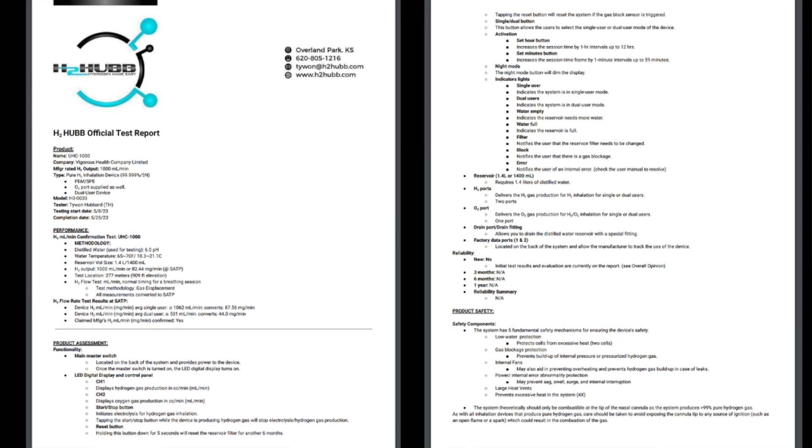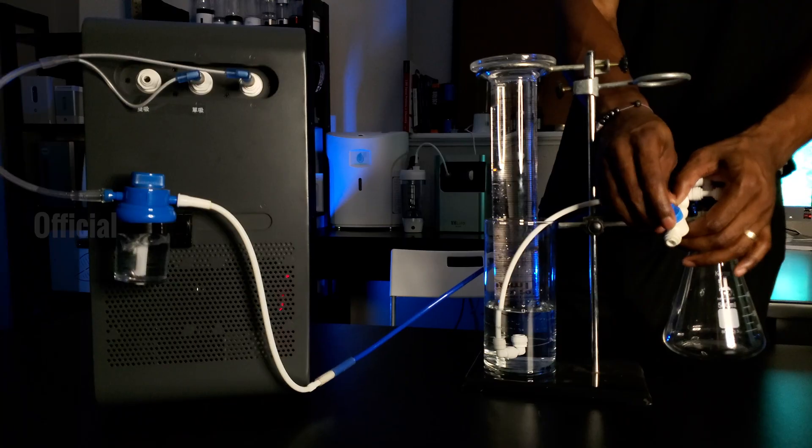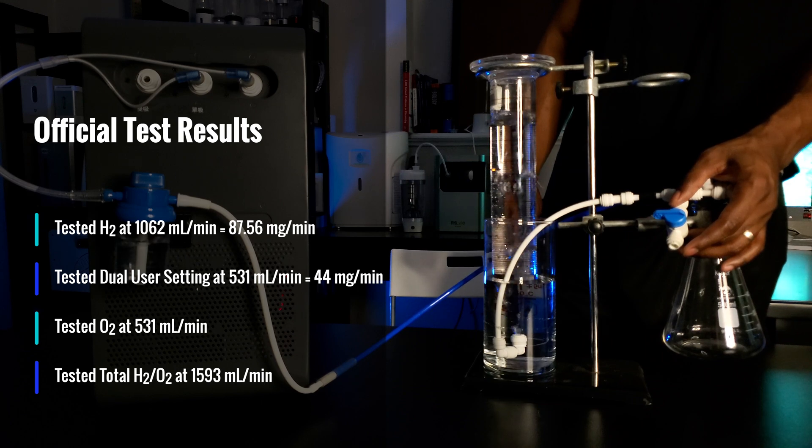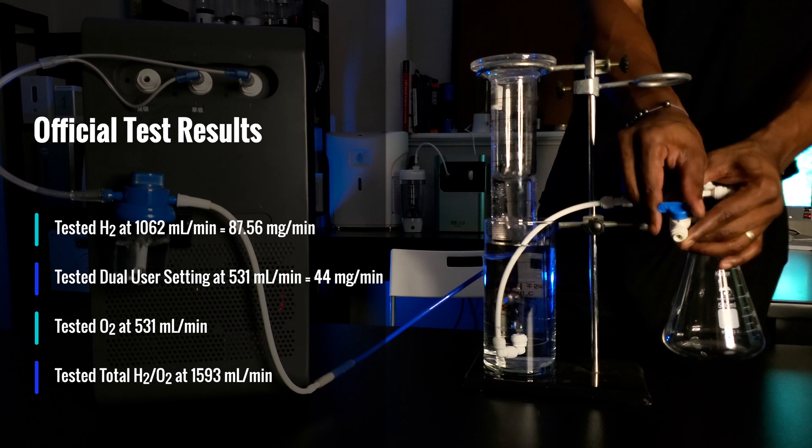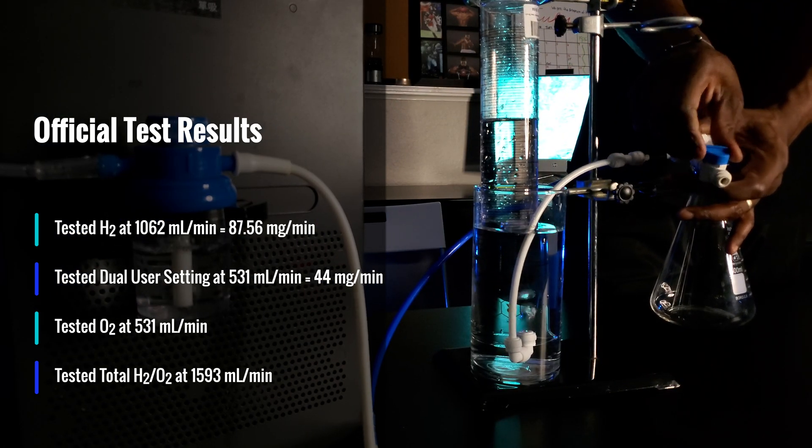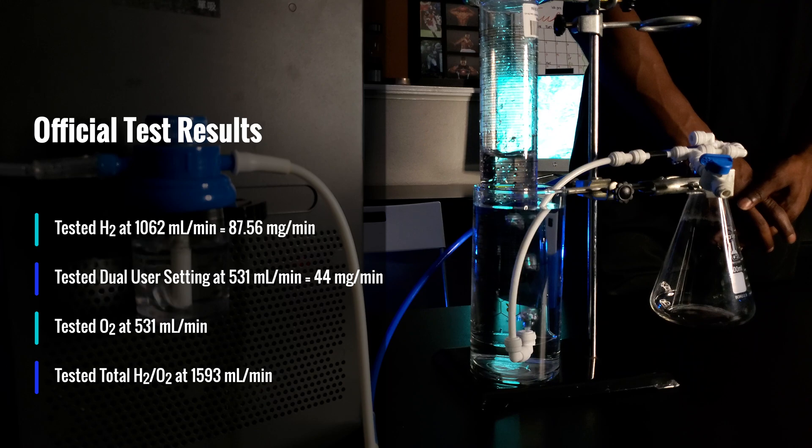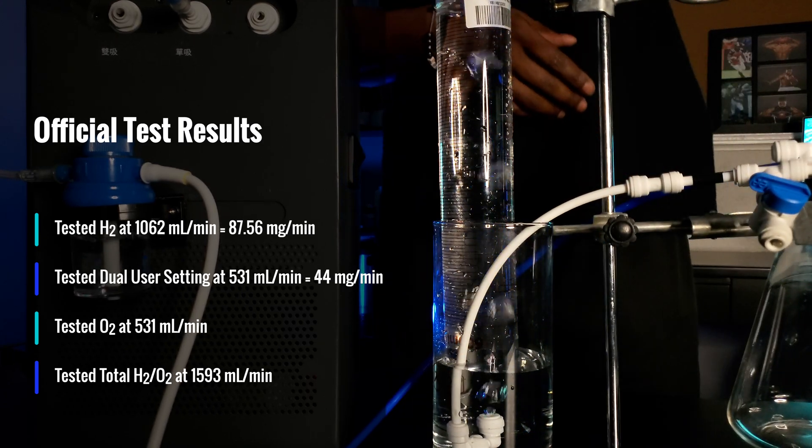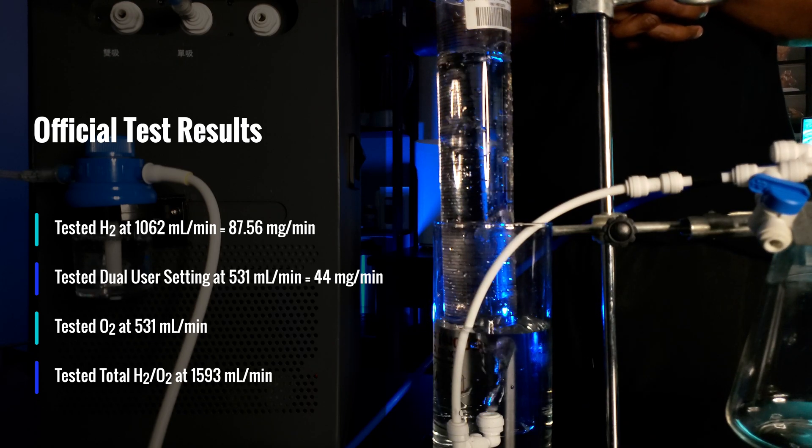Here's our test report on this product which can be found on the H2 Hub website. Now let's get into some of the details of this report and talk about what we found. We confirmed the hydrogen gas and oxygen gas flow rates of the system. We measured the hydrogen flow rate at 1062 milliliters per minute or 87.56 milligrams per minute of hydrogen gas. On the dual user setting we measured the hydrogen flow rate at 531 milliliters per minute or 44 milligrams per minute of H2. We also confirmed the oxygen flow rate at 531 milliliters per minute, and lastly we measured the total flow rate including the hydrogen gas and oxygen gas at 1593 milliliters per minute of H2 slash O2.